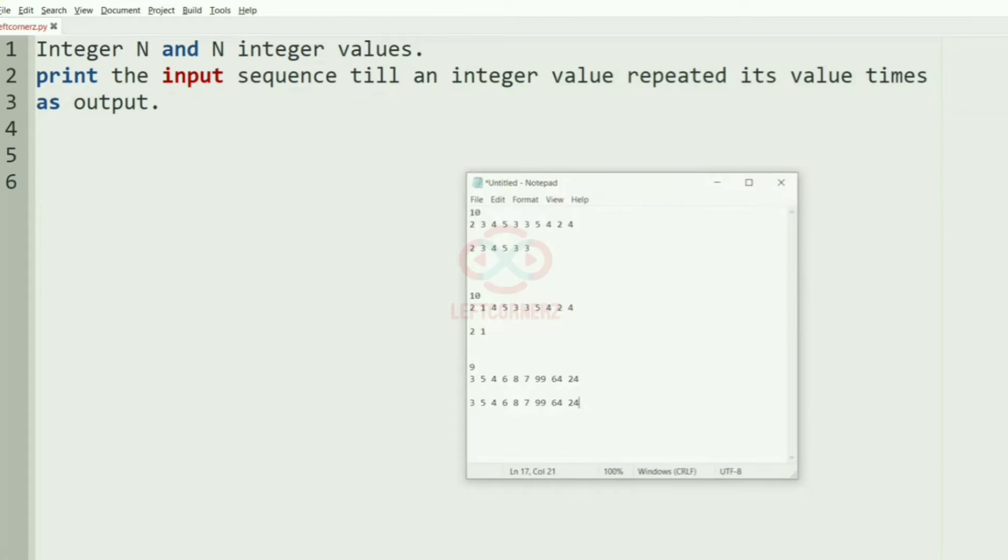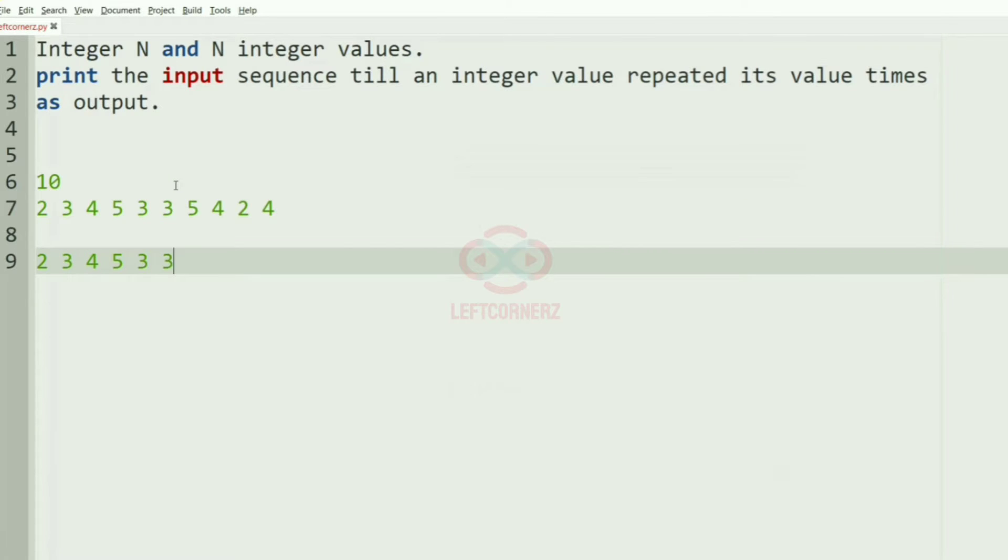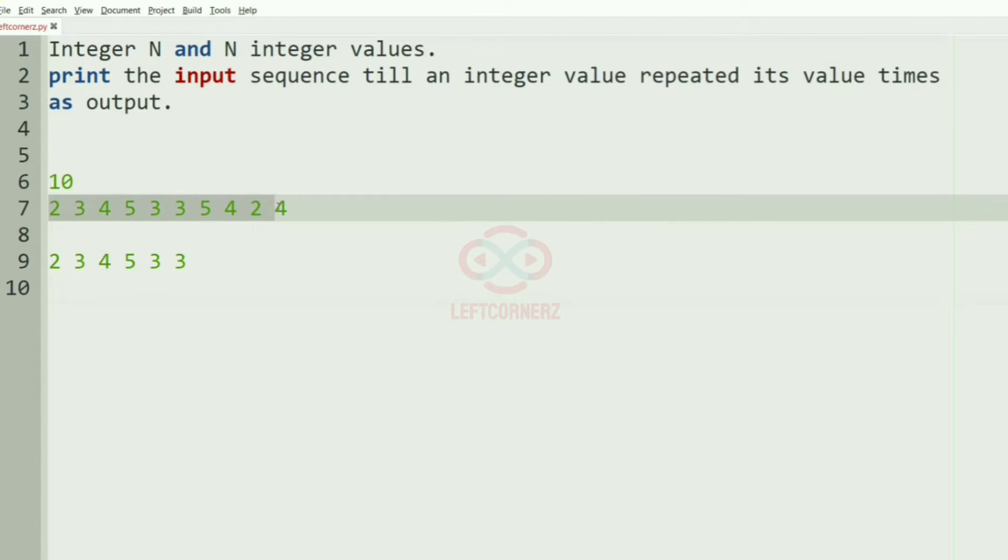So we'll understand it clearly with our first test case. So here we have 10 integers and this is the 10 integer values. So now let's see how we get our output.